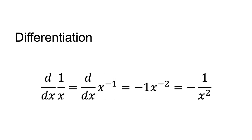Where you have a function 1/x to the power of a, it is often easier to write it as x to the power of negative a and use the rule for exponentiation. For example, d/dx 1/x equals d/dx x to the power of minus 1 equals minus 1 times x to the power of minus 2 equals minus 1/x squared.